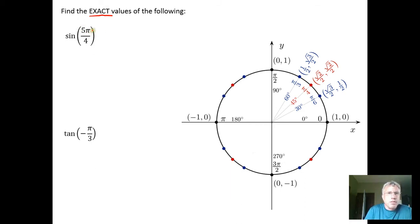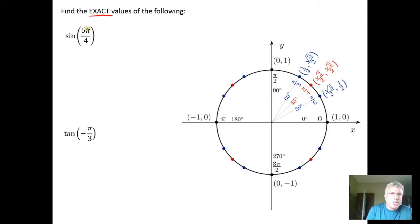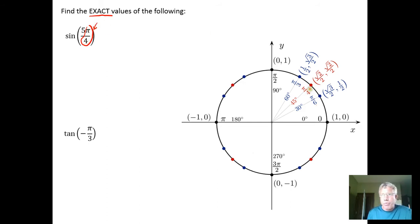The idea is to find the reference angle and use it to generate the exact value for the sine of 5π/4 radians. The nice thing about radian measure is that when working with special angles obtained by reflecting the core special angles over the x and y axes, the reference angle is always going to be π over the denominator — either a 3, a 4, or a 6. So this tells me my reference angle is π/4 in quadrant 1.